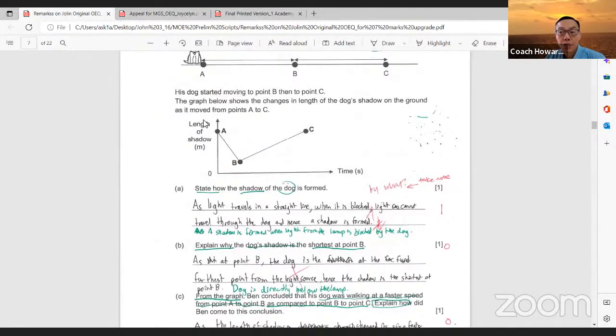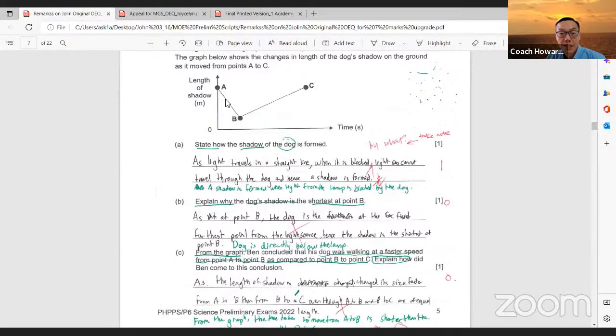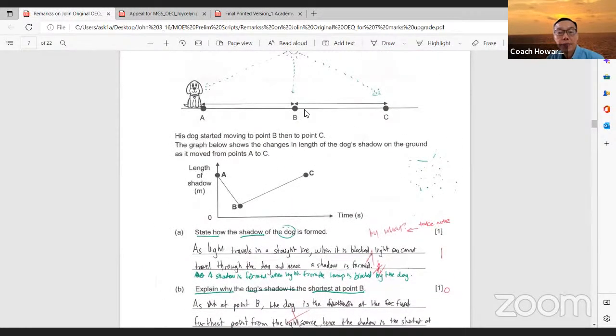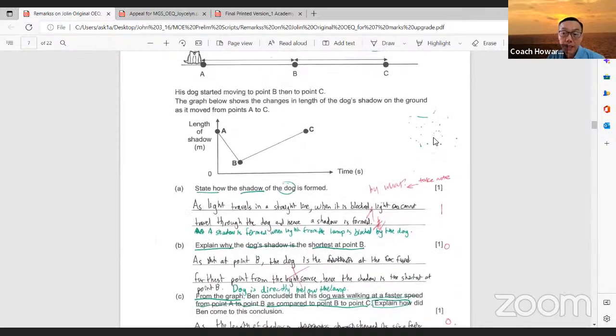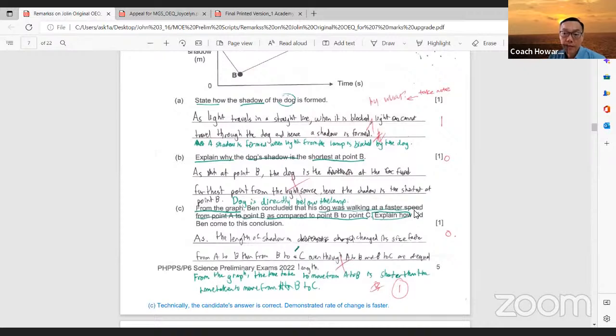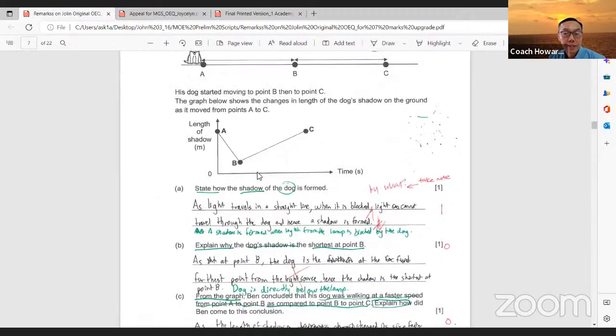From here we can understand that what she meant is the length of the shadow changes its size faster from A to B because this is the time. So in terms of representing this time frame, it's actually shorter. A to B is a shorter time frame than from B to C. As the length of shadow changes its size faster from A to B than from B to C.